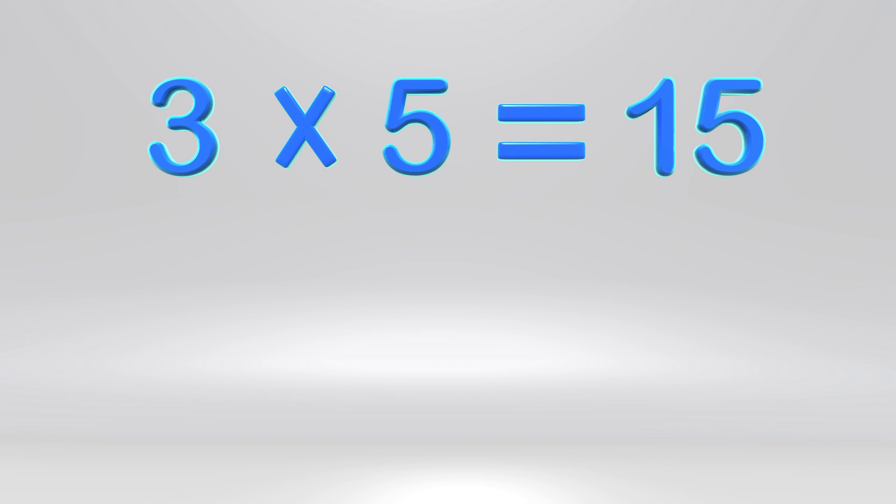Each of these numbers has a special name that we use in multiplication. The 3 and the 5 are called factors. The number 15 is the answer. The answer in a multiplication problem is called the product.